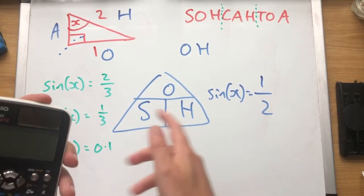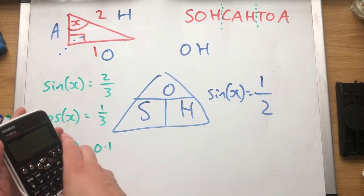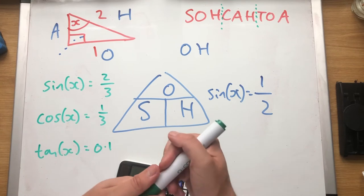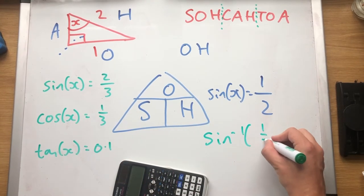Let's go back to this question here. Sine x equals 1 half. I don't want sine x, I want to know what x is. So in order to do that, I'm going to do sin to the minus 1, 1 half.